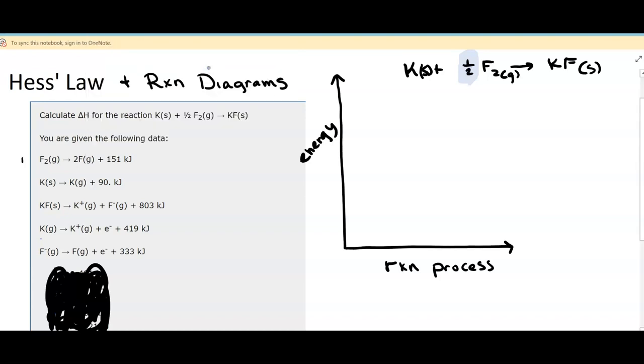Our next step is to look at our reactants and locate them in the available reactions number one, two, three, four, and five that we have. We have potassium solid in reaction number two, and fluorine molecules in reaction number one. So those are the first two we're going to consider.